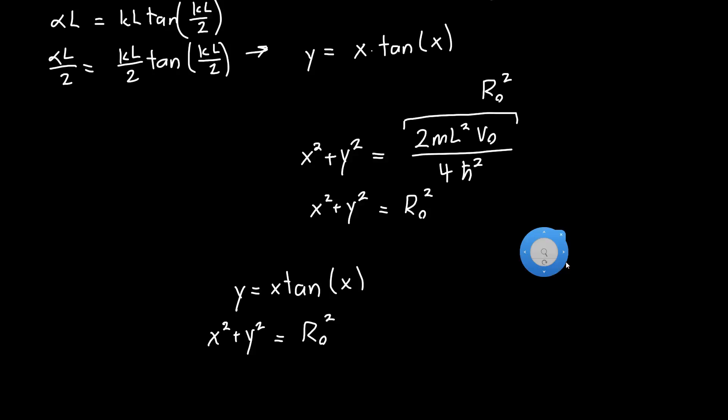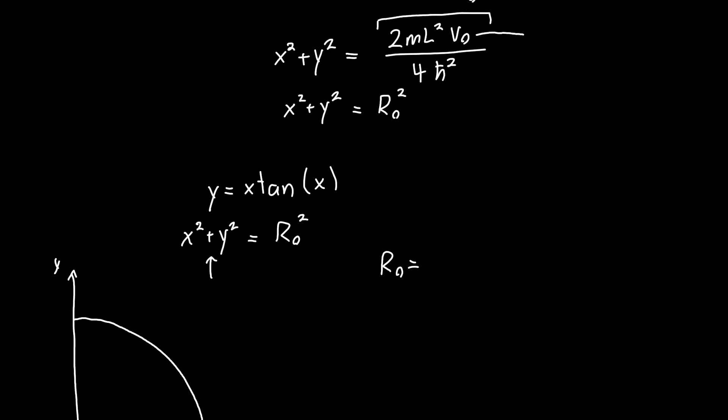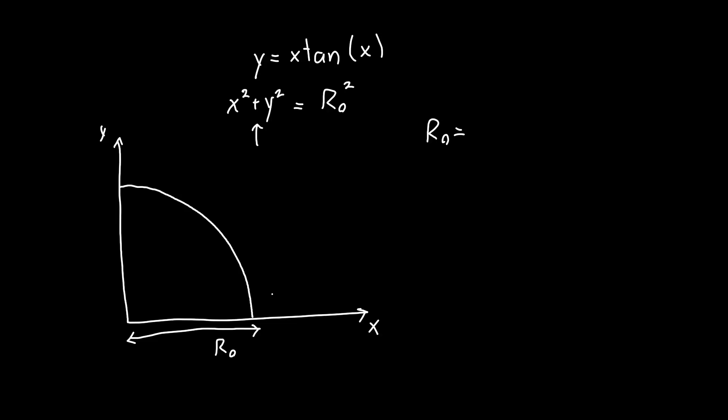And so let's just plot this. So if we have y on the y-axis and x on the x-axis, this equation is just the equation of a circle. So it just looks like this, where this distance here is R naught. And R naught, we just defined it above, but basically it's a function of the potential, V naught. It's also a function of the length. So as we increase the potential, we're increasing the radius of the circle.